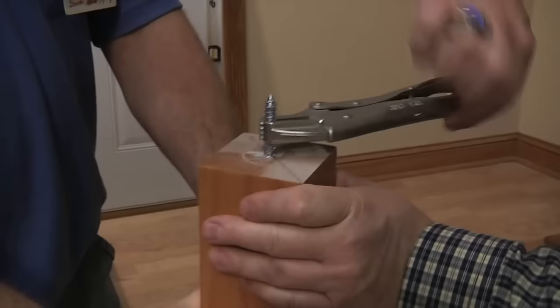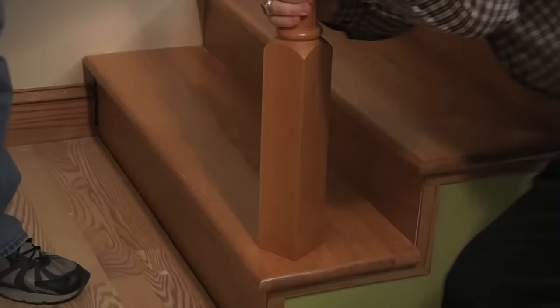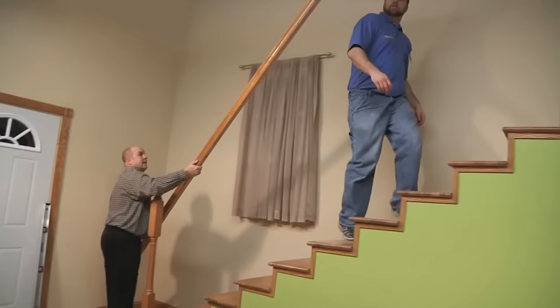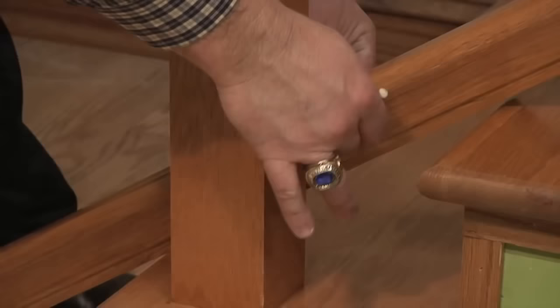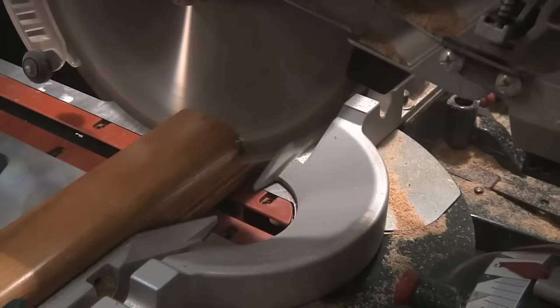A double-ended lag bolt is screwed into the bottom of the newel and then into the stair. Make sure the post is level. Then lay the handrail section on the treads of the stairs and mark both ends at the correct angle to meet the posts. Carefully cut the handrail at this angle.